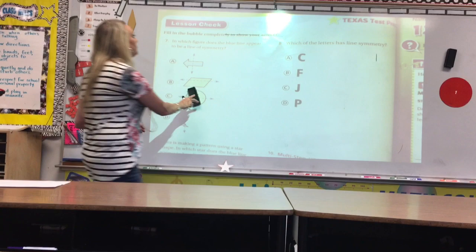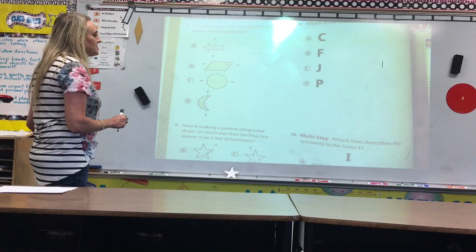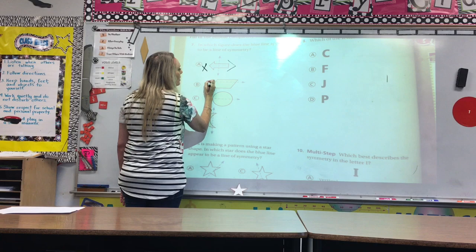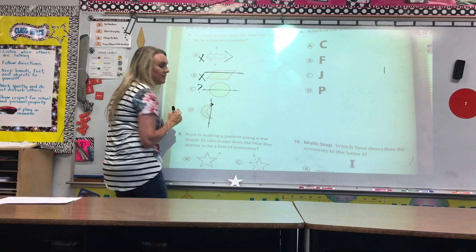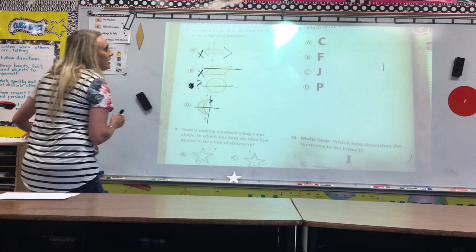Again, go ahead and push pause so you can try these yourself. Number 7, in which figure does the blue line appear to be a line of symmetry? Well, this side does not have the arrow, so that's a no. This side is too skinny, this is wider, no. Ah, the circle, we know, has an infinite amount. And the moon, they did not split it in the middle. They could have split it this way. So, it is C.